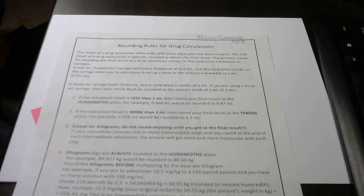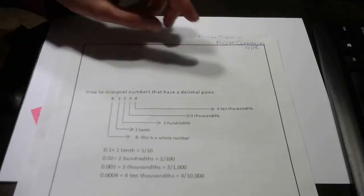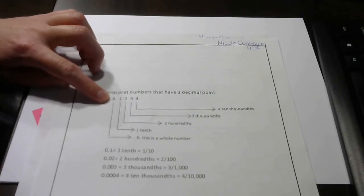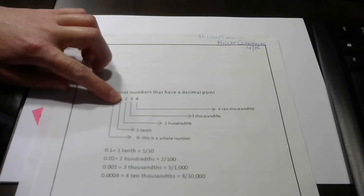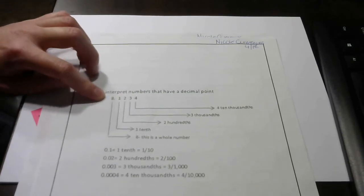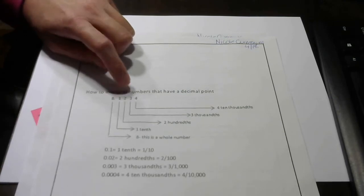Basically, if the calculated result is less than one milliliter, then round your final result to the hundredths place. So if this number is less than one milliliter, you want to round to the hundredths place, which is the second number to the right of the decimal place.